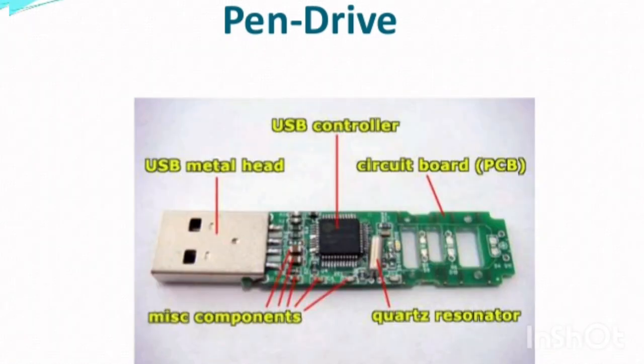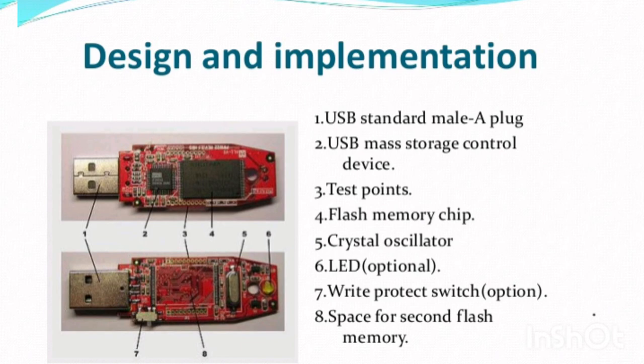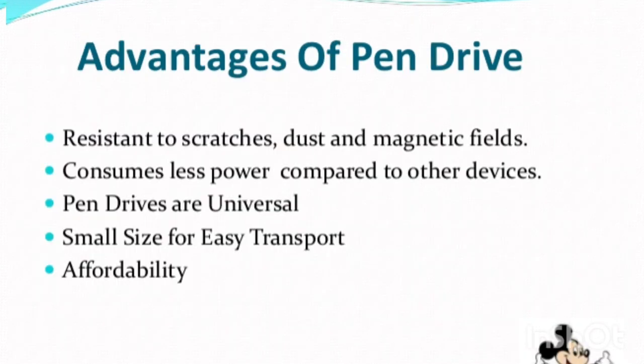The internal part of the pen drive includes a USB controller, circuit board, and various components. These internal parts are very important — if anything is damaged, the pen drive will not work properly. The main advantage of the pen drive is that it is very affordable, available in different sizes from 4 GB to 32 GB depending on cost. Consumers prefer pen drives over other storage devices because they are very handy and free from scratches and magnetic field issues.